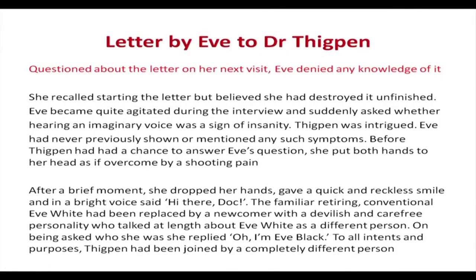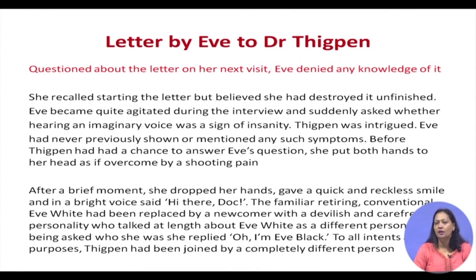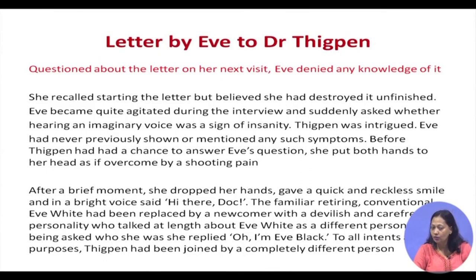That is when they got to find out about another personality that was part of Eve White. In the next visit, when they questioned her about the letter, Eve denied any knowledge of it. She said she had started writing the letter but believed she had destroyed it unfinished. She couldn't even remember posting it, and definitely could not remember writing anything at the end of it.